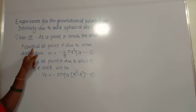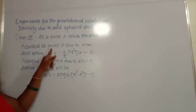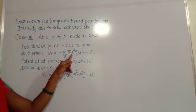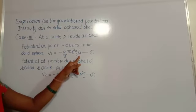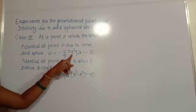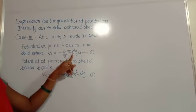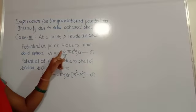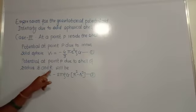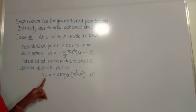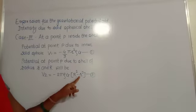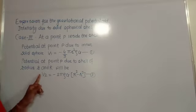In Case 3, at a point P inside the shell, we already calculated the potential at P due to the inner solid sphere: V1 = −(4/3)πr²ρG, where G is the gravitational constant, ρ is the density of the material, and r is the radius. The potential at P due to the shell of inner radius r and outer radius R is V2 = −2πρG(R² − r²).